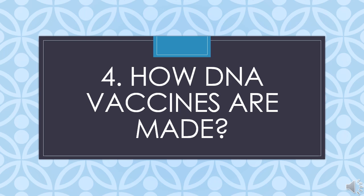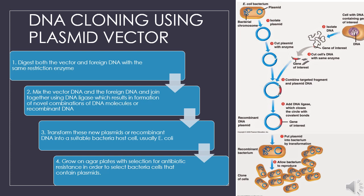DNA vaccines are produced by DNA cloning using a plasmid vector. There are four main steps involved. First, both the vector and the foreign DNA to be inserted are digested with the same restriction enzyme. Next, the vector DNA and foreign DNA are mixed and joined together using DNA ligase, resulting in the formation of recombinant DNA. This new plasmid is then transformed into a suitable bacterium, usually E. coli. Finally, the DNA is grown on agar plates with selection for antibiotic resistance to select bacteria cells that contain plasmids.